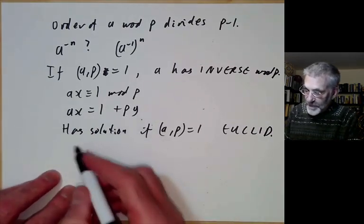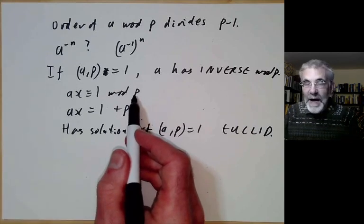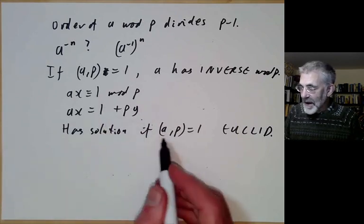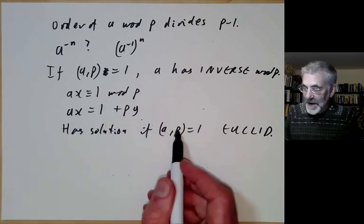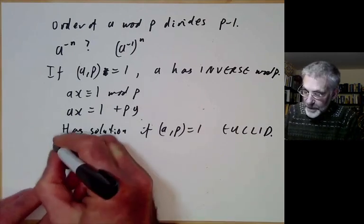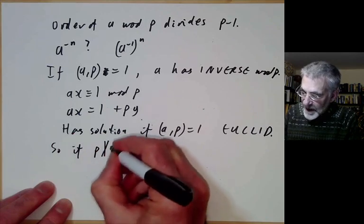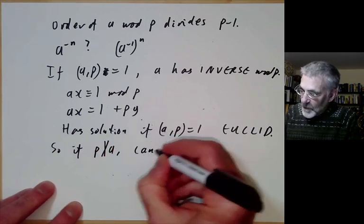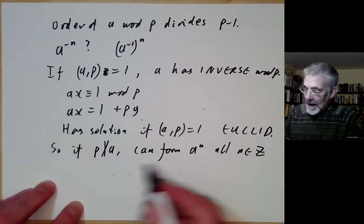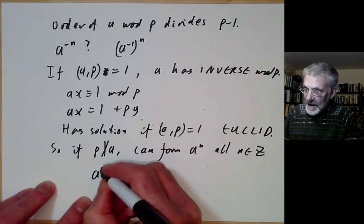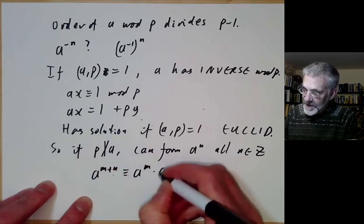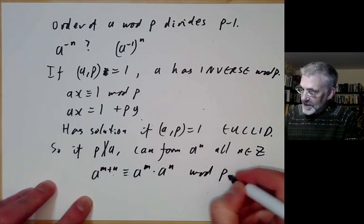Similarly, if p is replaced by any number m, a number has an inverse modulo m if it's co-prime to m. But we're just going to use the prime case for the moment. So if p does not divide a, we can form a to the n for all integers n, and this obeys the usual formulas: a to the m plus n is congruent to a to the m times a to the n modulo p.